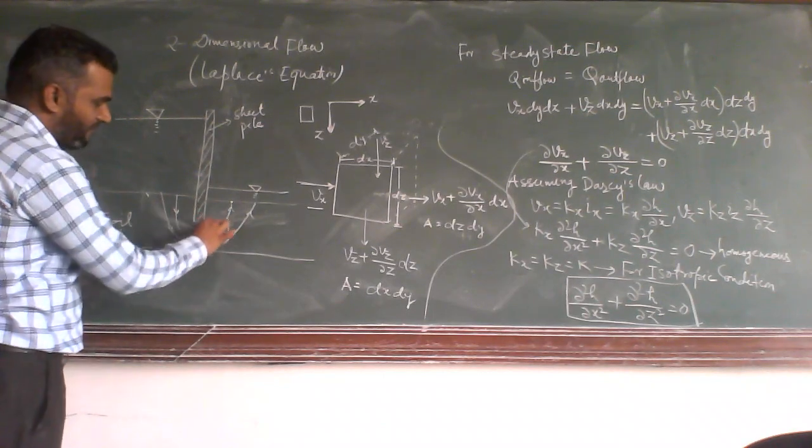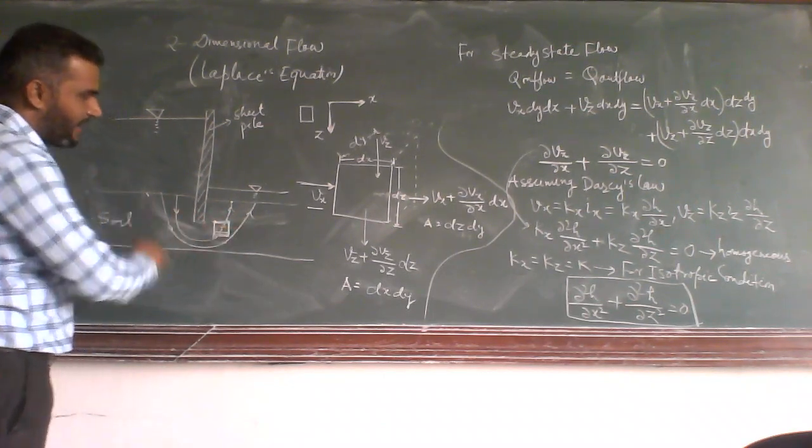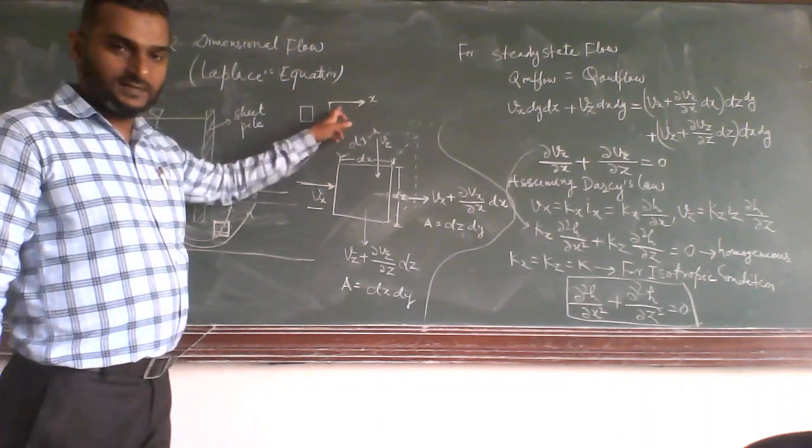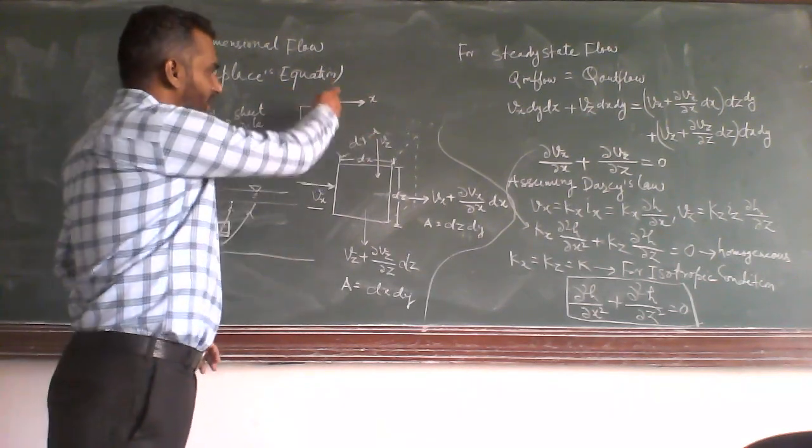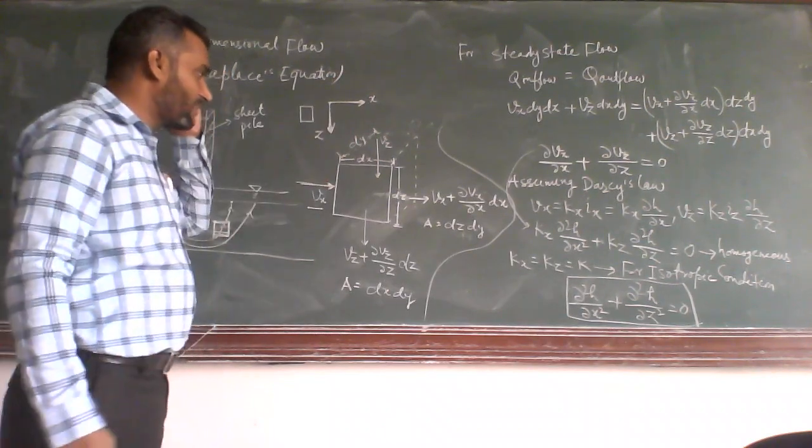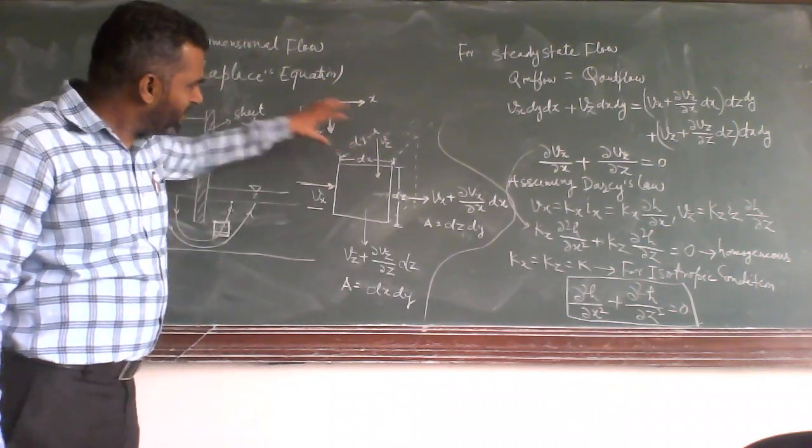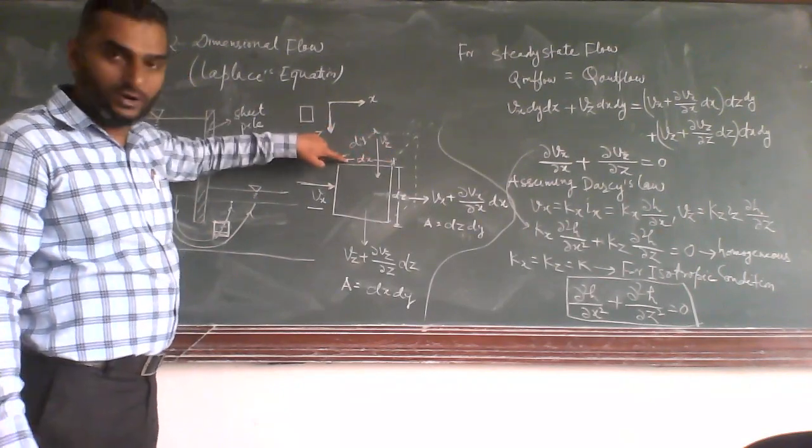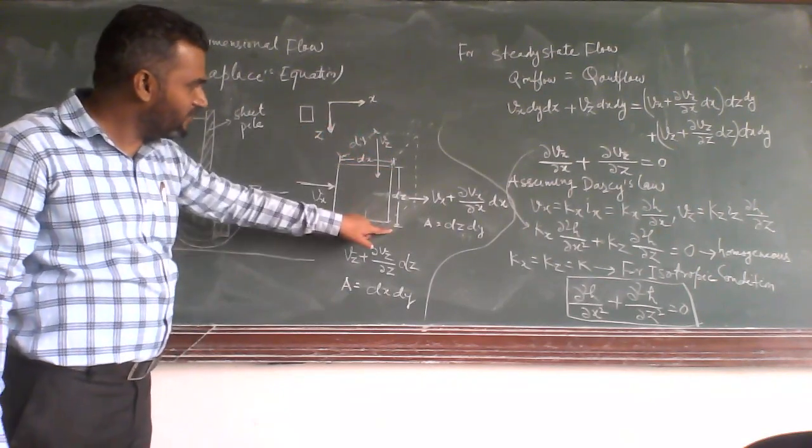Suppose if we take a very small element like this, if the axis along horizontal is x and along vertical is z, and if you zoom in, the dimension of this element is dx along x and dz along z.